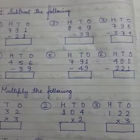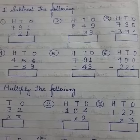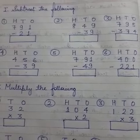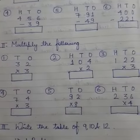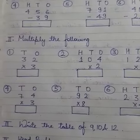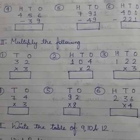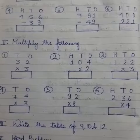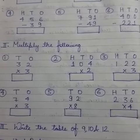In the first section, then the second question is multiply the following. Six questions are here in the second section. Multiply the following, then your third question...